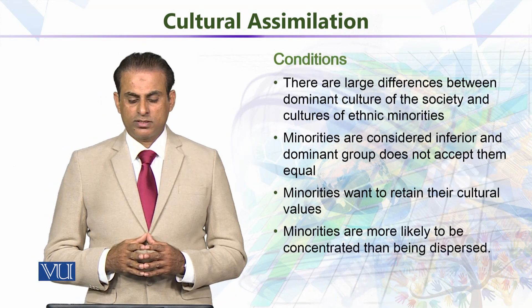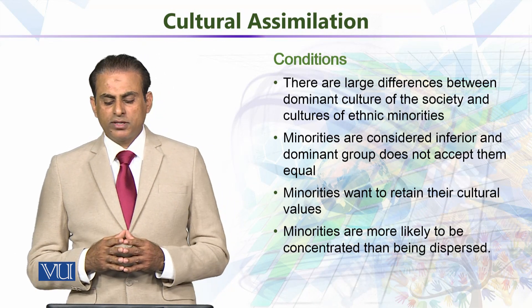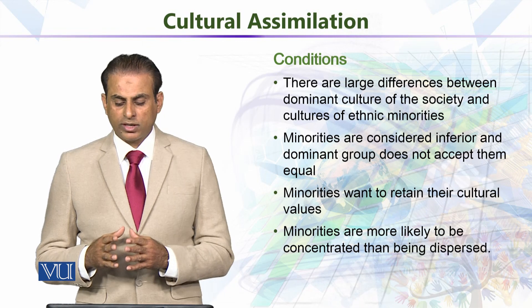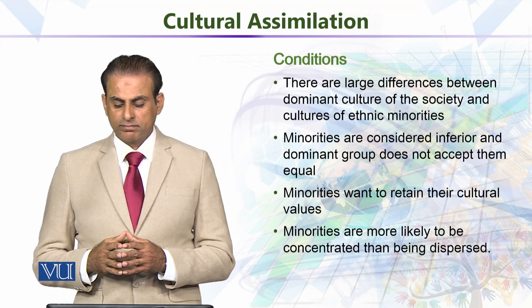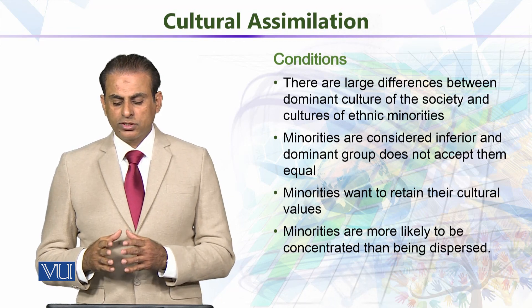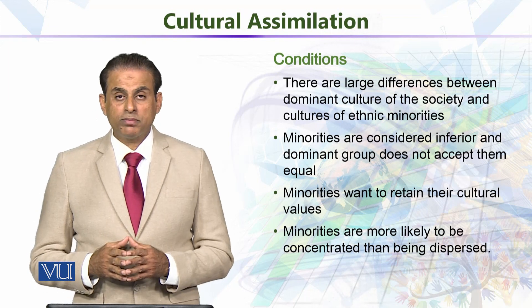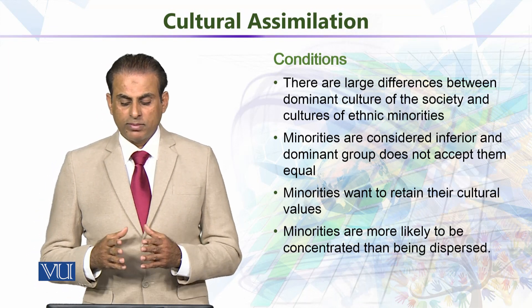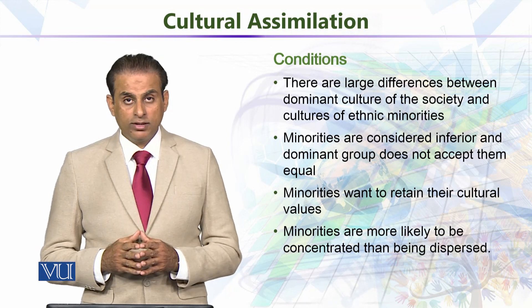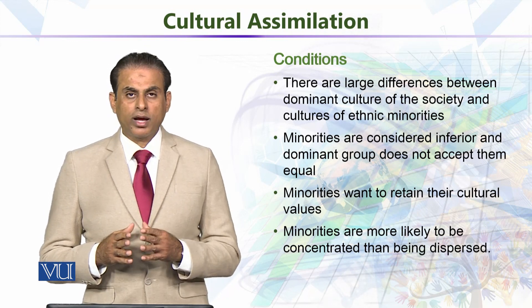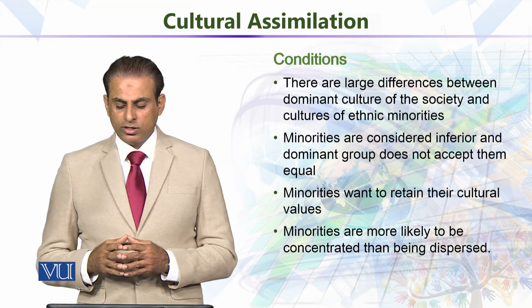What are the conditions? There are large differences between the dominant culture of the society and the cultures of ethnic minorities. Minorities are considered inferior and the dominant group does not accept them as equals. Minorities want to retain their cultural values. Minorities are more likely to be concentrated rather than dispersed.